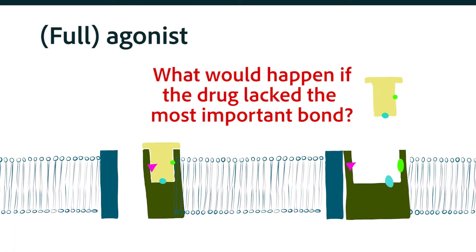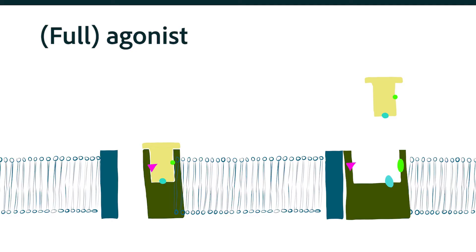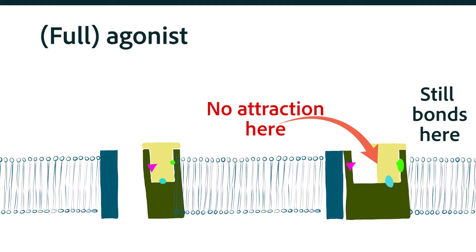Now looking at the full agonist again, what would happen if you had a drug shaped in the exact same way, with the same attractant bonds in this corner, but without that strong ionic bond that allowed this portion of the protein to fold up the way it did with a normal ligand?